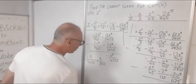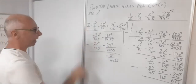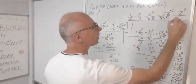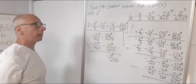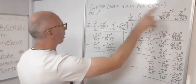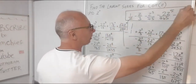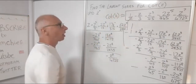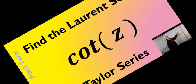Now dividing minus z to the 8 over 4725 by z gives minus z to the 7 over 4725. We could continue to the next line, but multiplying further would give z to the 10, which is beyond our needed range, so there's no point going further. This is our final answer: the Laurent series for cotangent of z is 1/z minus z/3 minus z cubed/45 minus 2z to the 5/945 minus z to the 7/4725.